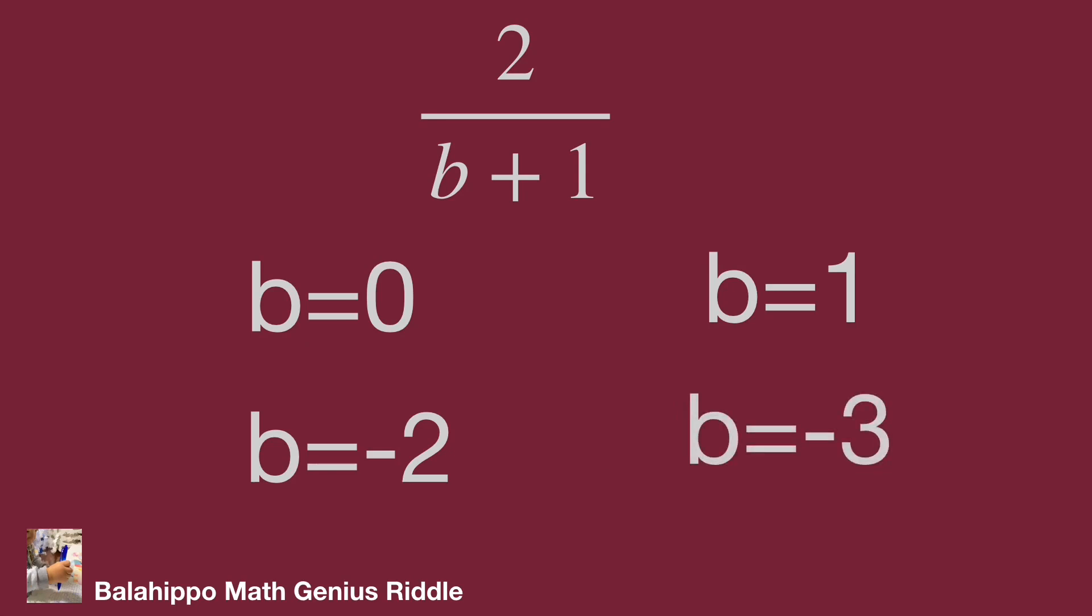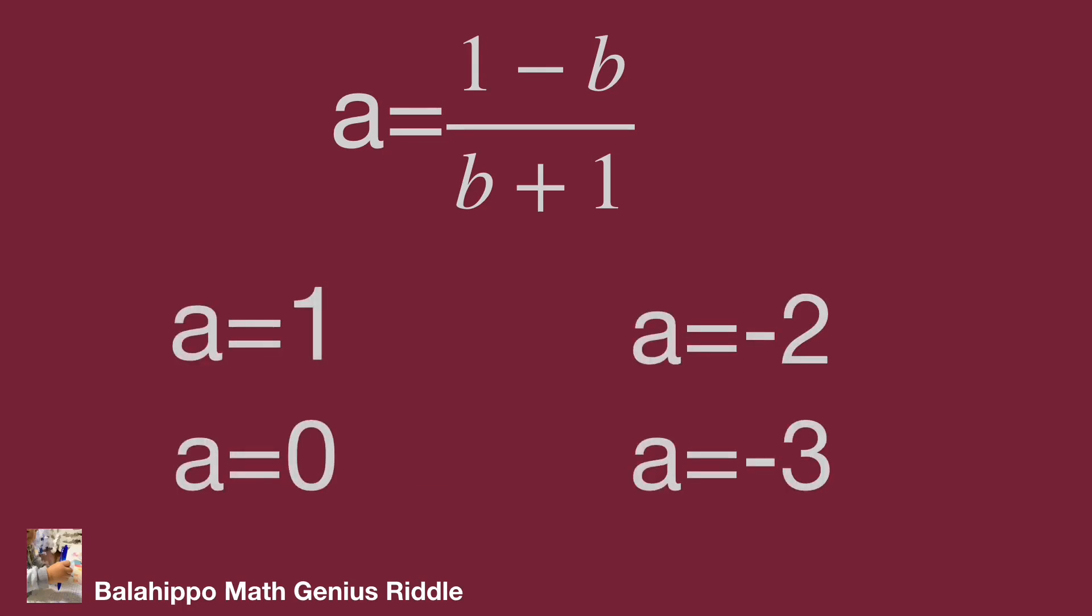Then find the value of a from a equals (1 minus b) over (b plus 1). Substitute b by 0, 1, minus 2, and minus 3 into the fraction. Get a equals 1, 0, minus 2, and minus 3.